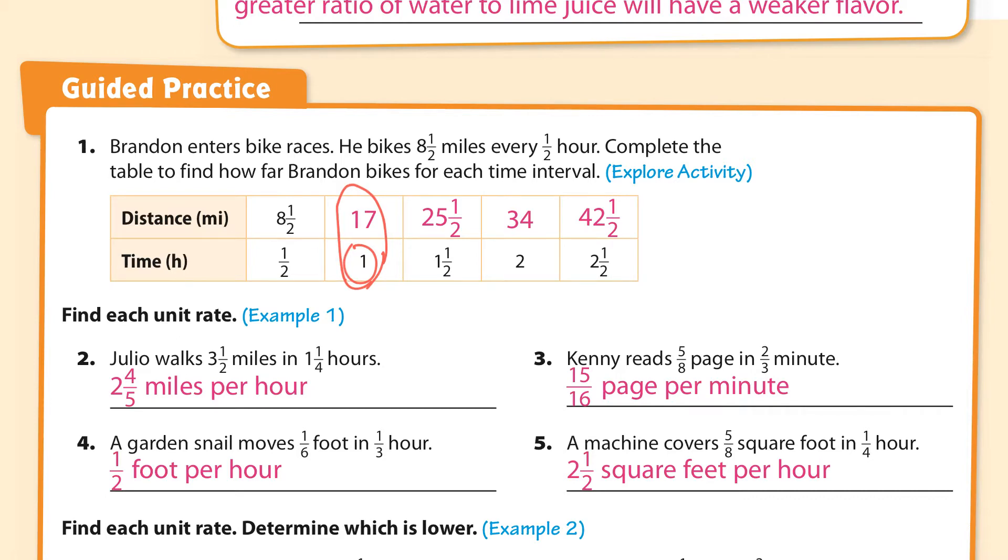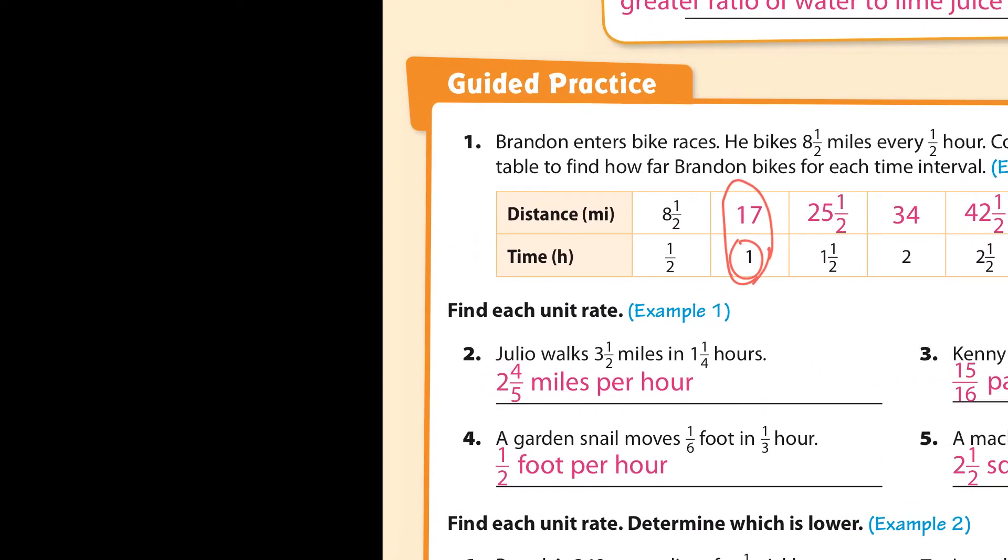Now to get that unit rate, for number one we have 8.5 per one half hour. We really want it to be per hour, and probably the easiest way to look at this is if I double that, that's for an hour. So I'd have to double this. 8.5 times 2, that is 17. And so that's why right here it's 17.